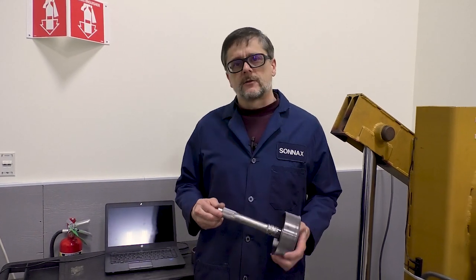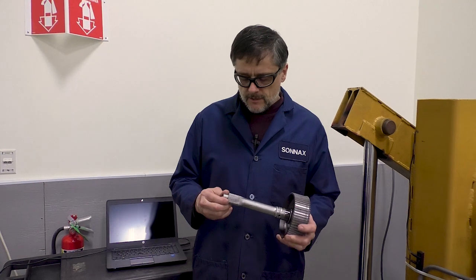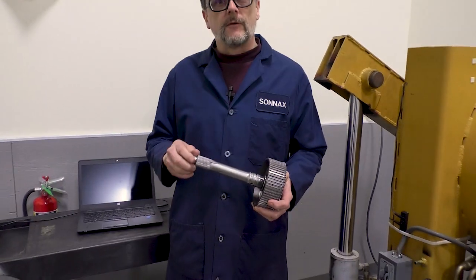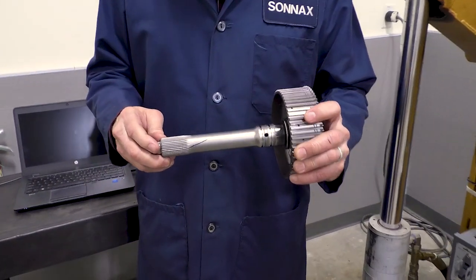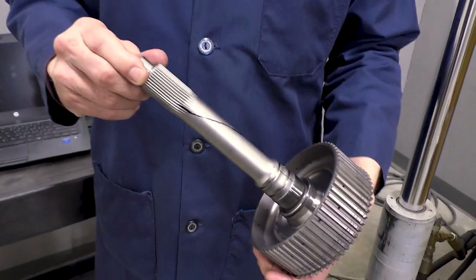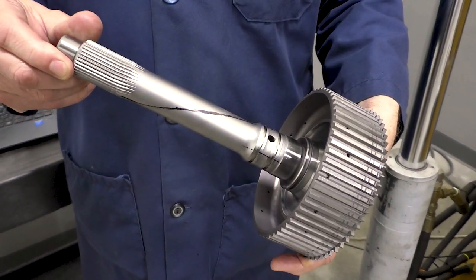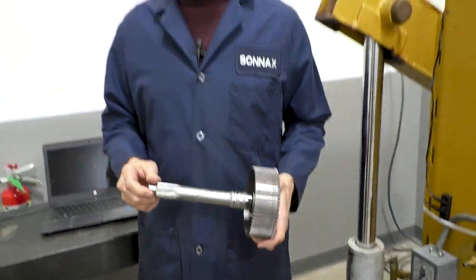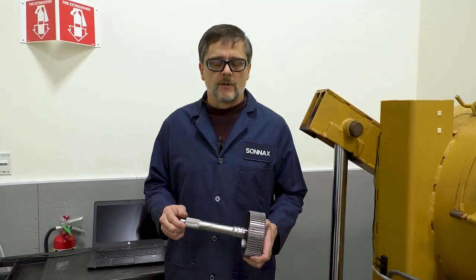All right. So that's what I would call a successful test of our 35 spline 48RE input shaft. It went to about 12 to 15 degrees before it yielded. And then the really nice piece was, we twisted it about a hundred degrees. You can see the candy stripe on there and it never broke. So that's a really good indicator of its toughness.